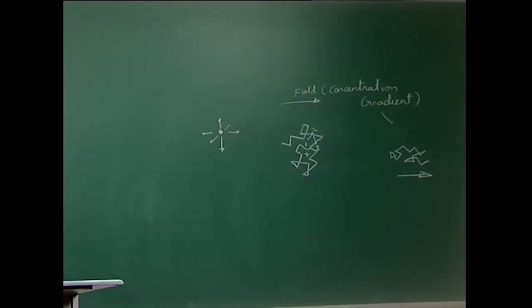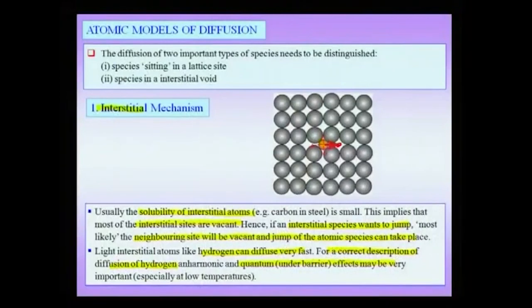An atom sitting in its lattice position vibrates because of temperature, and once in a while it jumps over the barrier into a neighboring position—say from site A to B to C. In the absence of a concentration gradient there is no net flow, but with a gradient the atoms move in one direction, which we call long-range diffusion. The most important point is that most interstitial voids are vacant because the solubility of interstitial atoms is small; for instance, carbon has very low solubility in BCC iron.